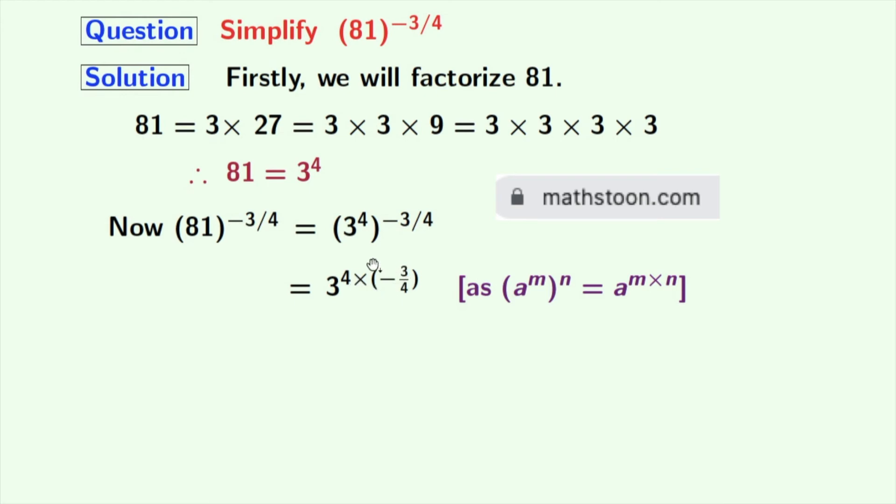Now, if we simplify the power, we get 1 by 3 to the power 3. As we know that a to the power minus n is equal to 1 by a to the power n. Here a is 3 and n is also 3.